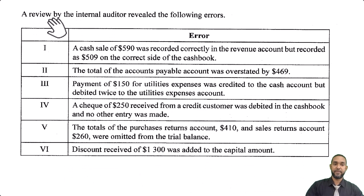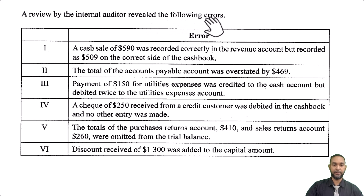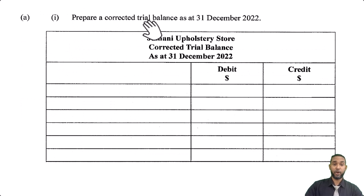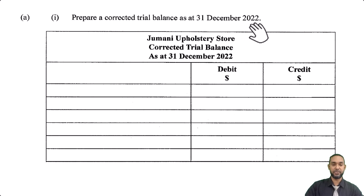A review by the internal auditor revealed the following errors — six errors in total. What is required for the question: prepare a corrected trial balance as of 31st December 2022. They give you a template to fill out and it's worth 10 marks.